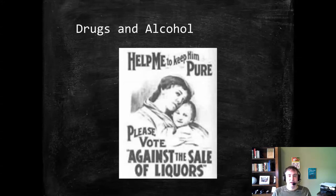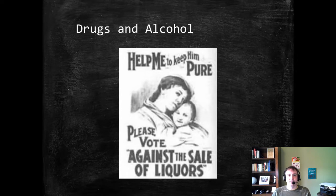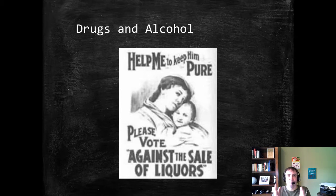Today we'll continue talking about the category known as victimless crimes. The idea is these are crimes that don't have an obvious person or property of another that is affected, so the rationales and theories explaining why these things are criminalized are less certain. Many people believe that a lot of things within this category should not be criminalized at all. We looked last time at Lawrence v. Texas, which provides a framework for thinking about some of these questions. Even though it focused on anti-sodomy laws, it had a principle that was larger than that.